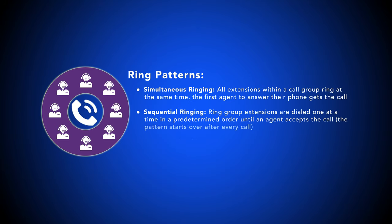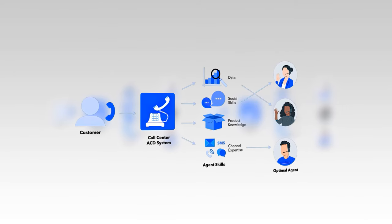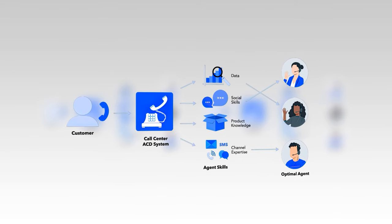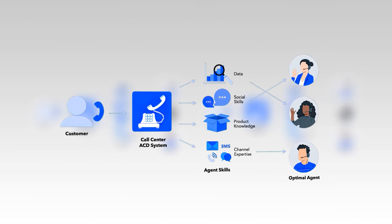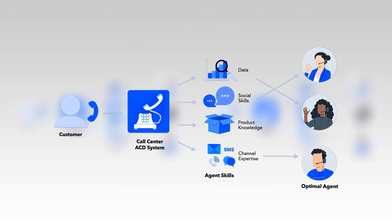Now for ring groups. A ring group, or call group, is a call handling strategy that forwards inbound calls to a preconfigured group of agent extensions instead of to a single phone number. Ring groups increase the likelihood of connecting callers to live agents. Admins can choose from several ring patterns to manage call flows, including those shown here. Call routing automatically directs inbound callers to the ideal extension, individual agent, call queue, ring group, or department according to preset rules.